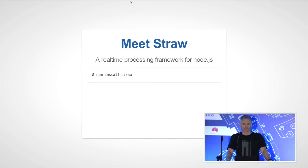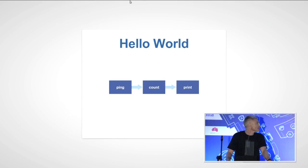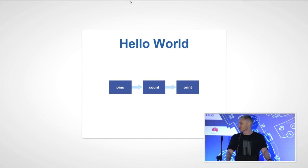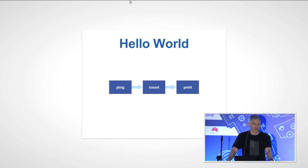Meet Straw — a real-time processing framework for Node.js. It's on NPM; you can install it, and in fact you should. It works just like any other NPM module. A good way to introduce Straw is through a Hello World application made up of three nodes connected with two wires. Data flows left to right. The ping node periodically generates an output. The count node counts how many inputs it receives and sends that total through its output. The print node just prints whatever message it receives to standard out.